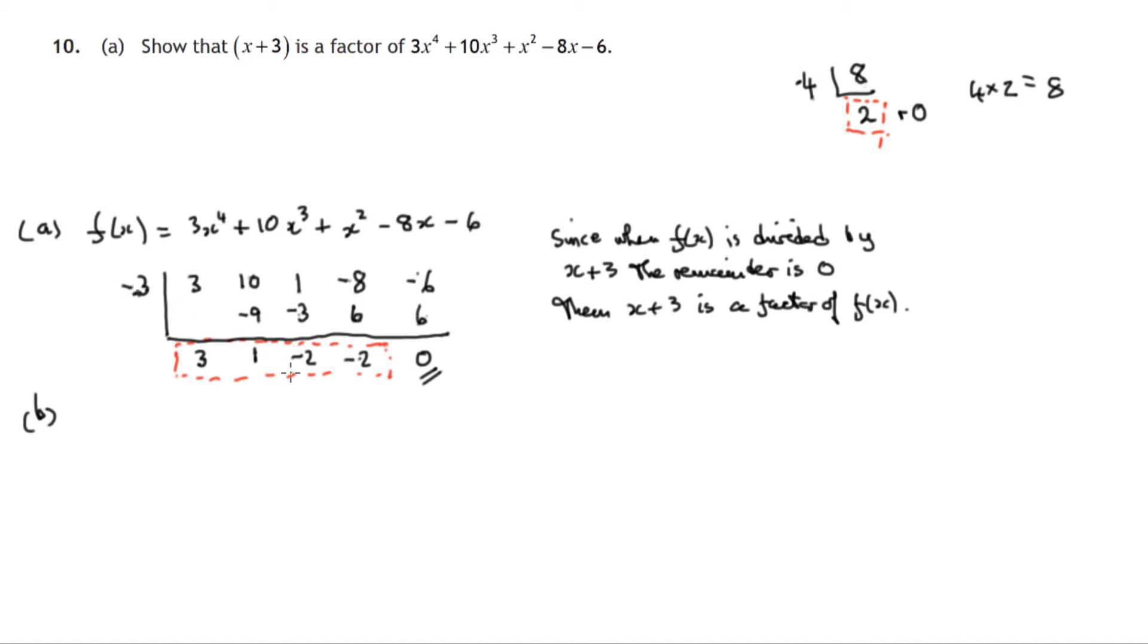So let me spell this out: x plus 3 times, now since we've divided a degree 4 polynomial, the degree will go down by 1, so we'll get a cubic polynomial, a degree 3 polynomial. So this 3 will be the coefficient of x cubed term, plus 1 x squared, minus 2x, minus 2, plus a remainder of 0.